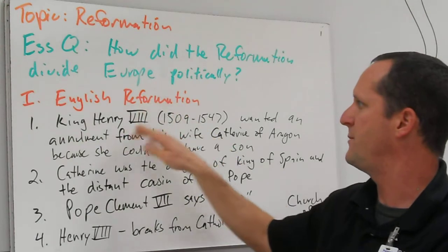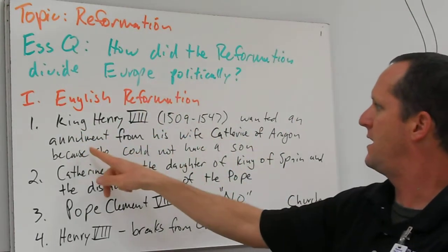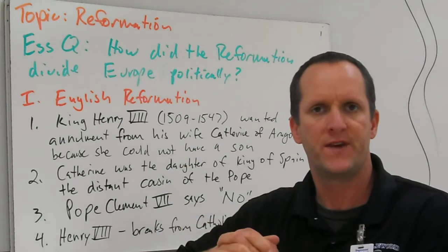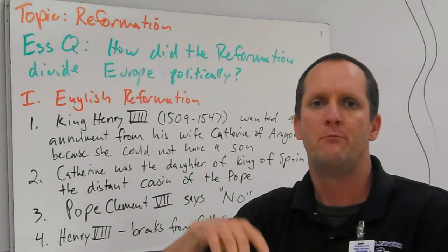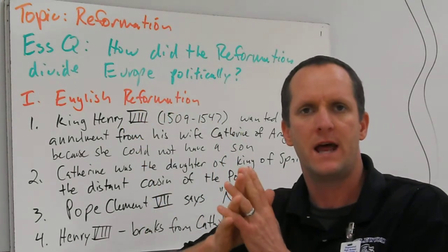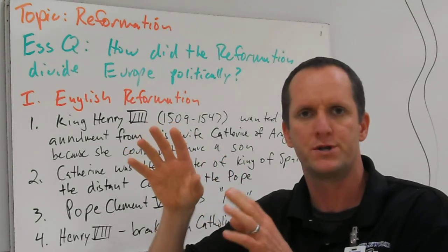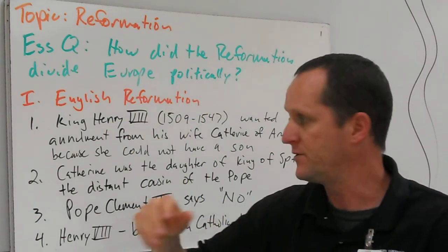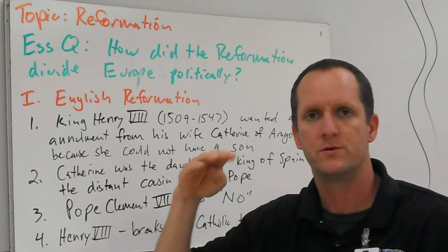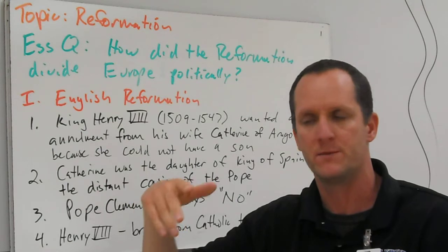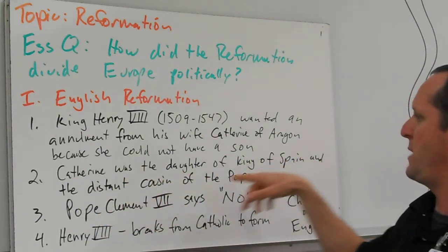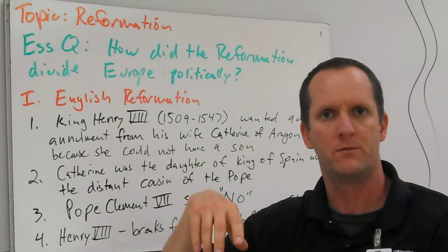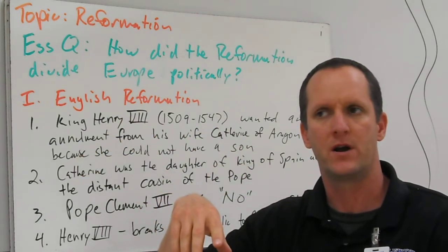In particular, the English Reformation. King Henry VIII wanted an annulment from his wife Catherine of Aragon because she could not have a son. At the beginning he did not support Luther — he continued to support the church. But when it came time to look to the future, he could not have a son with Catherine of Aragon, so he decided to try to get a divorce. Now Catherine was the daughter of the King of Spain and a distant cousin of the Pope. So Pope Clement VII said no — he would not grant the annulment, and the case was settled.